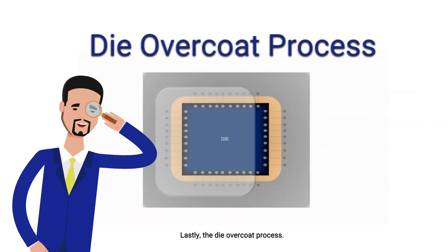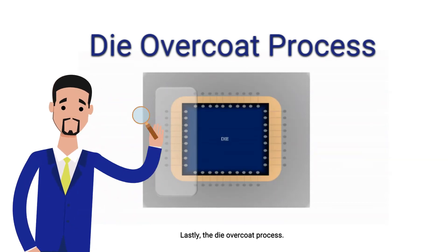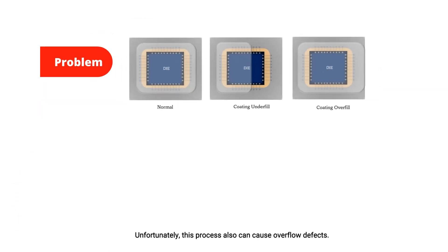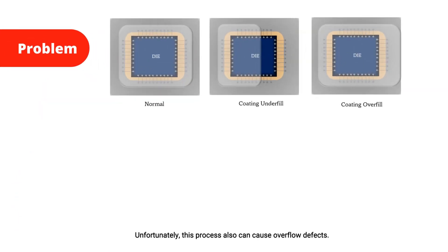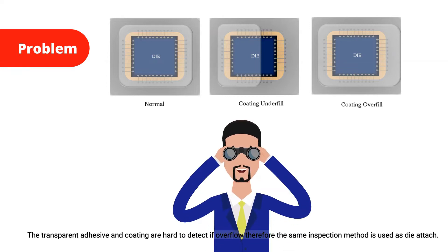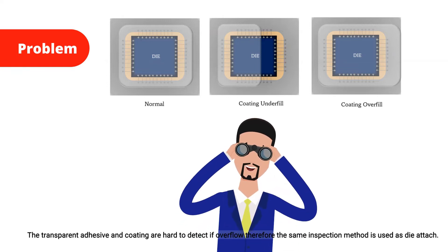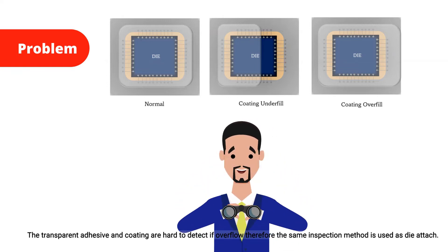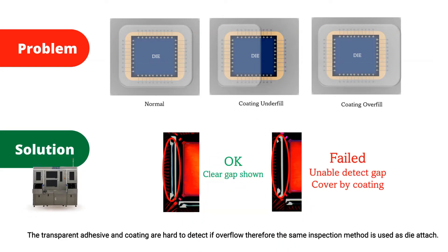Lastly, the die overcoat process. Unfortunately, this process can also cause overflow defects. The transparent adhesive and coating are hard to detect if overflow occurs, therefore the same inspection method is used as for die attach.